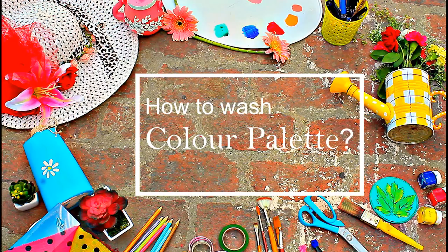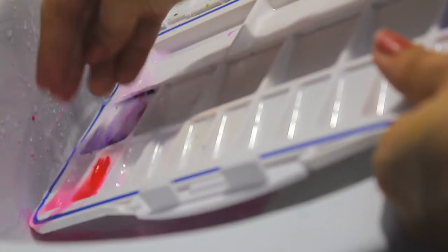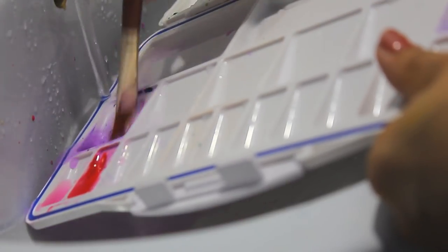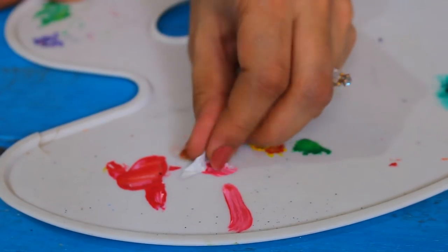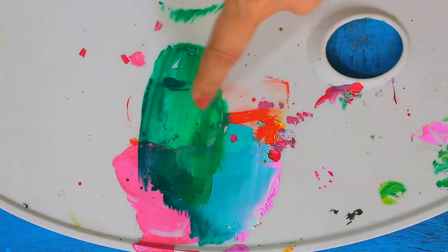Now let's clean our color palettes. If the colors are wet, then you can wash them directly as acrylic colors are soluble in water and the color can be easily removed just by using water. If the colors have dried properly, you can even peel off the colors and remove them.